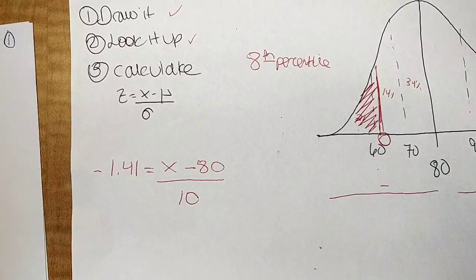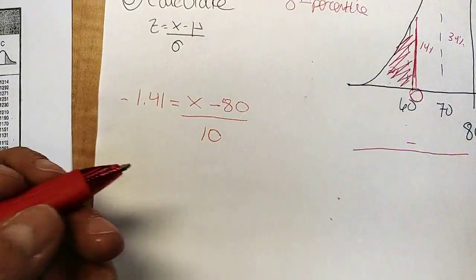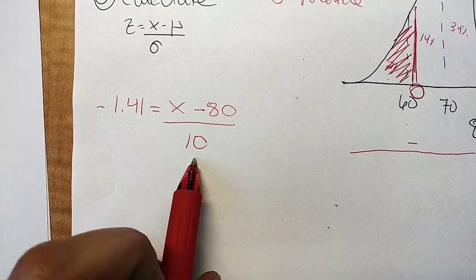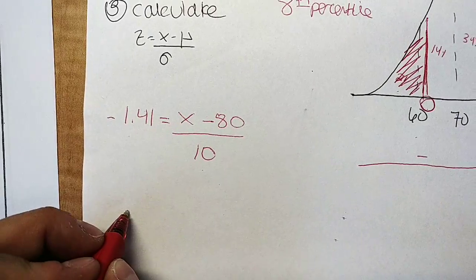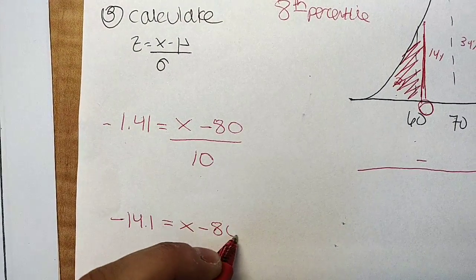And if we forgot that, when you do your answers, it'll come out wrong, and you'll remember, and I'll show you what that would look like. So this is a negative 1.41. So how do I get rid of the 10 that's in the denominator? I multiply it both sides. So I'm going to get a negative 14.1 equals X minus 80.